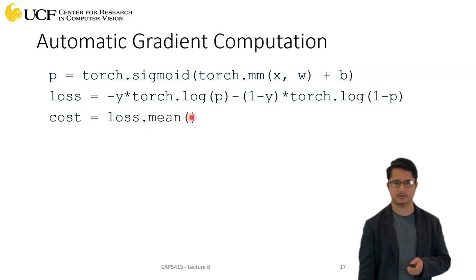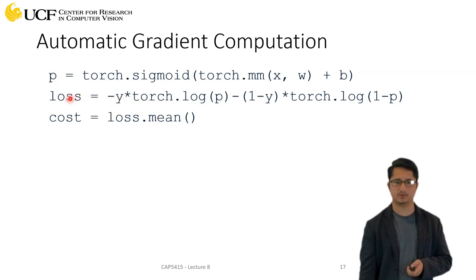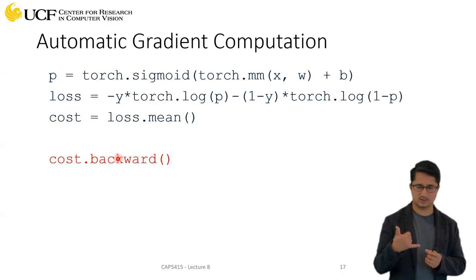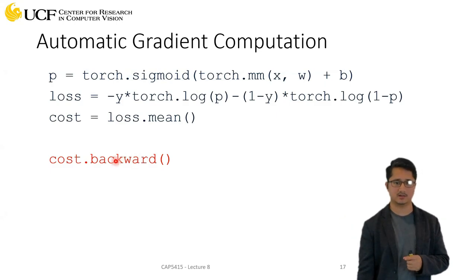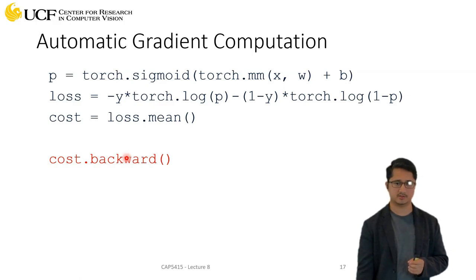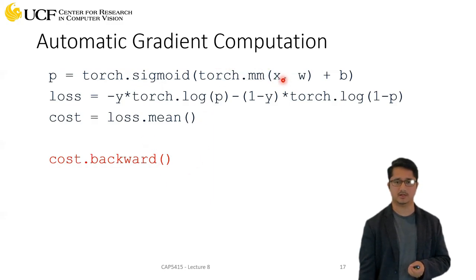Putting it together: your neural network takes x as input, w are the weights, b are the biases. The loss function compares the prediction to the ground truth. You average the loss over multiple samples. Then you call cost.backward() — a library function provided by PyTorch — and all the chain rule and backpropagation steps we studied are handled by this single function call. You don't have to compute gradients manually.